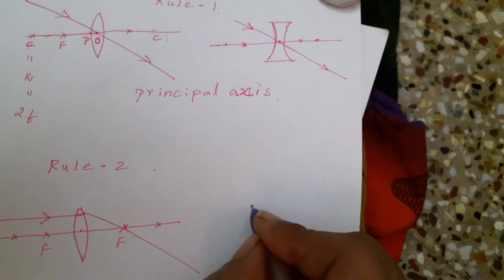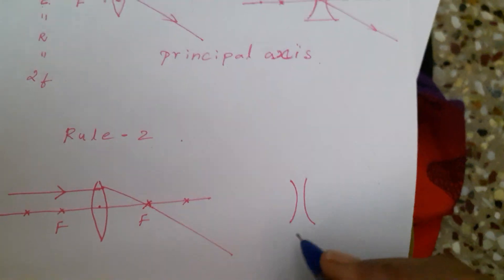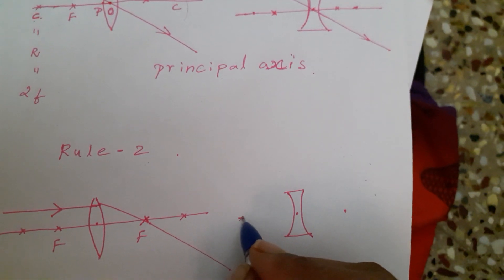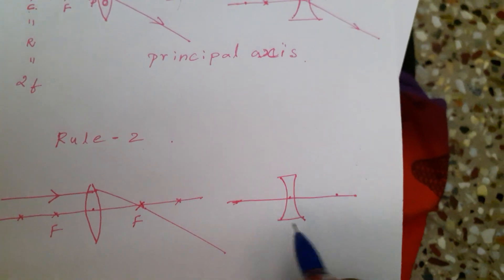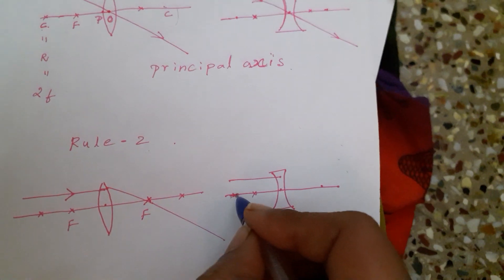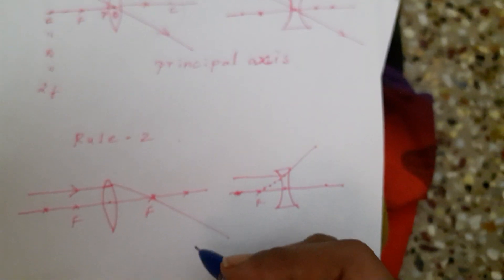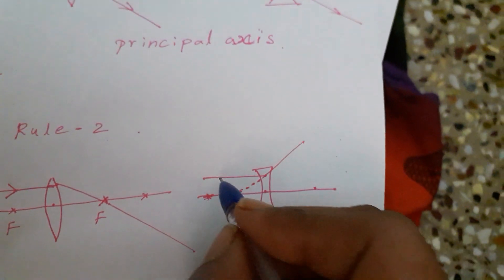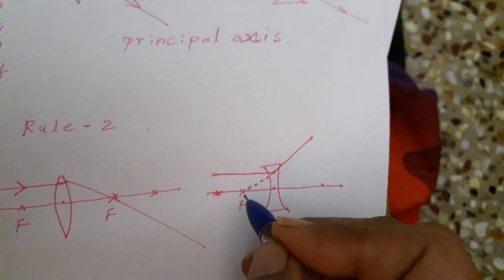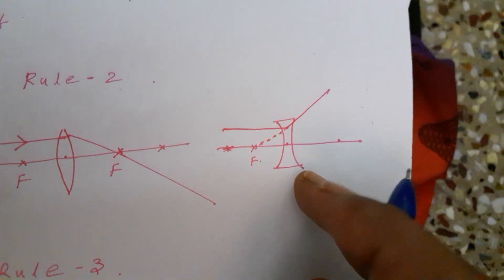The second rule for your concave lens: draw a concave lens, keep its optic center and the center of curvature, and draw the line passing through them — this is called the principal axis. The ray which is parallel to the principal axis will appear to diverge from the principal focus. I will show this using a dotted line, which is an imaginary line. After refraction, the ray will appear to diverge from the principal focus. This is your second rule for the concave lens.